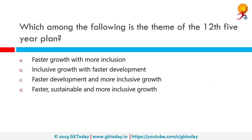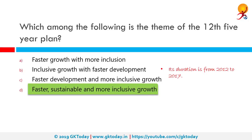Which among the following is the theme of the 12th Five Year Plan? The 12th Five Year Plan was the last one before it got replaced by NITI Aayog. Its duration was from 2012 to 2017. Its main theme is 'faster, more inclusive and sustainable growth' — option D is the correct answer. Its growth rate target is 8%. However, NITI Aayog documents have no financial role; they are only policy guide maps for the government.